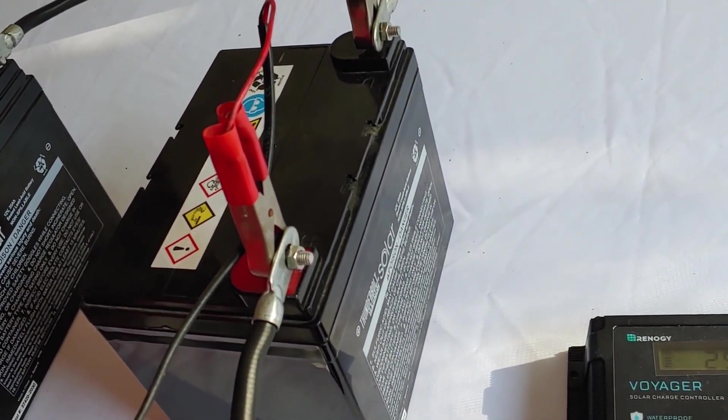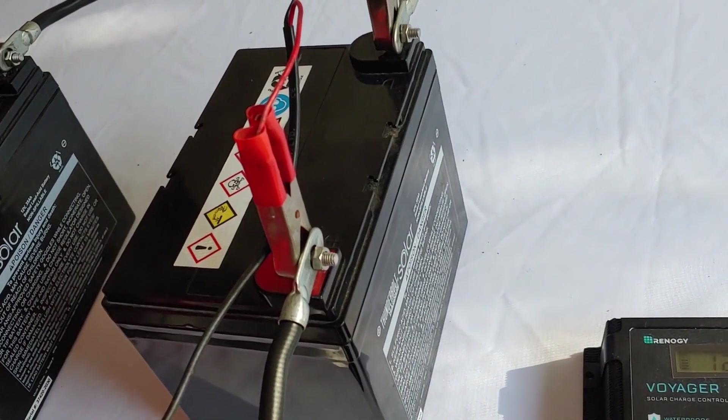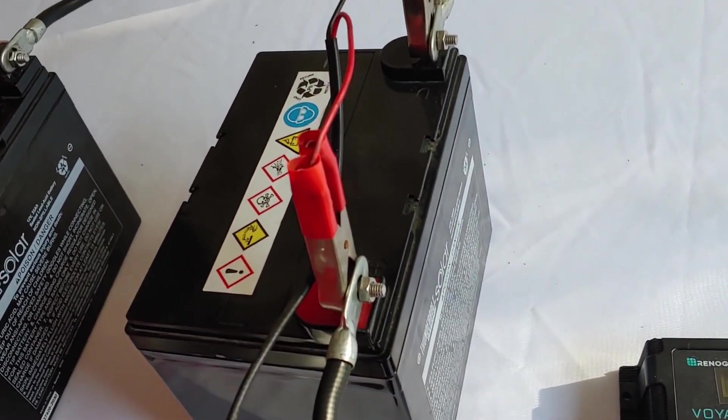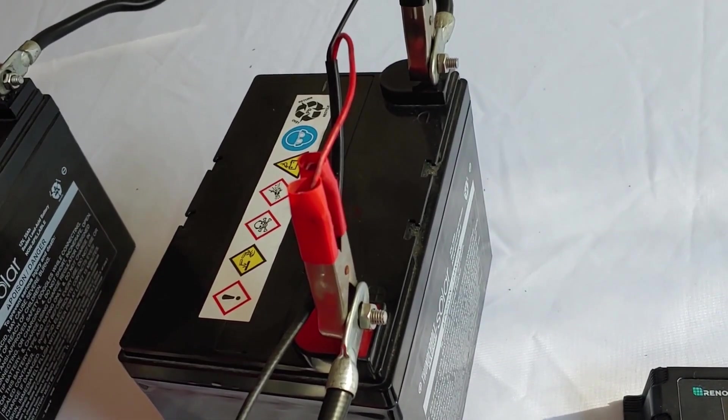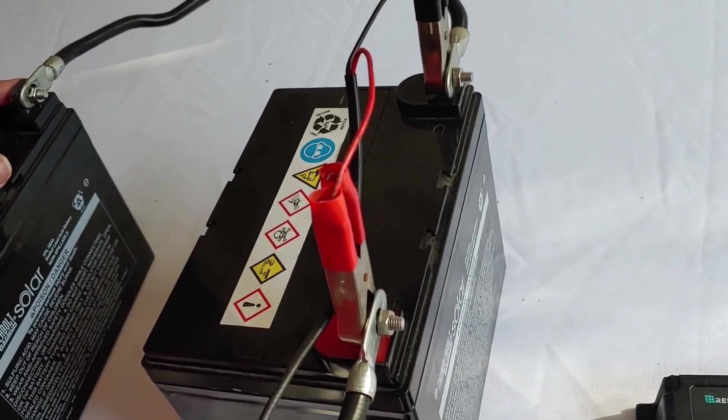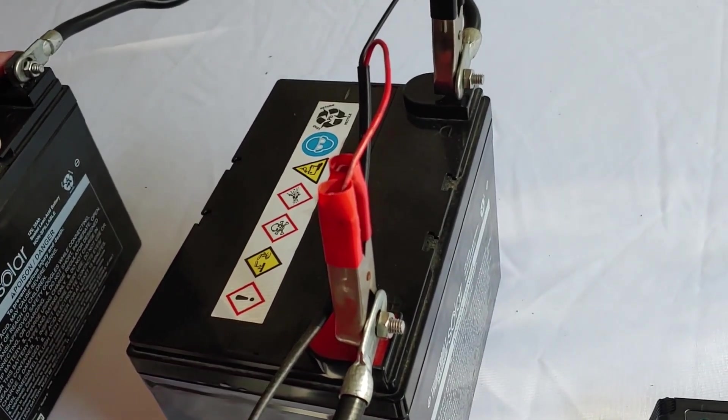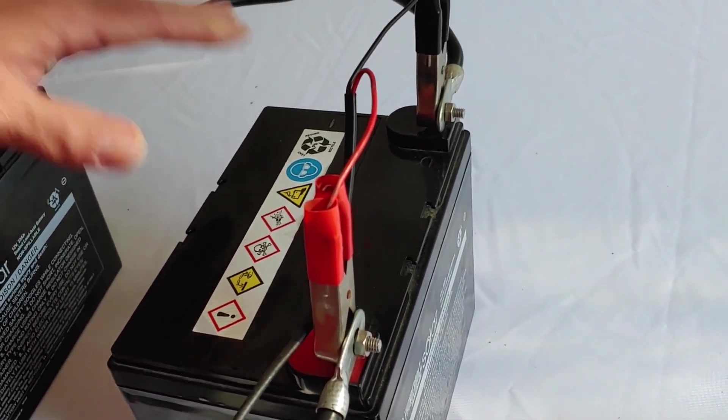As always, it's your equipment. Do what's best for you. So that's a very simple way how you charge a battery bank with the solar panels. Connect the solar panels, of course, to the charge controller. Connect the charge controller to your battery bank.